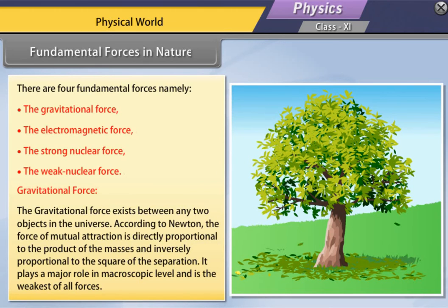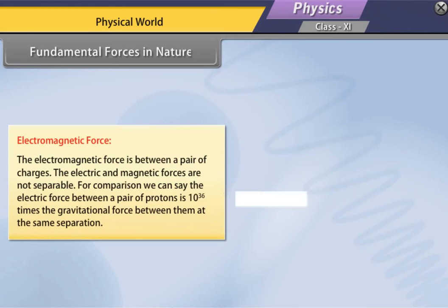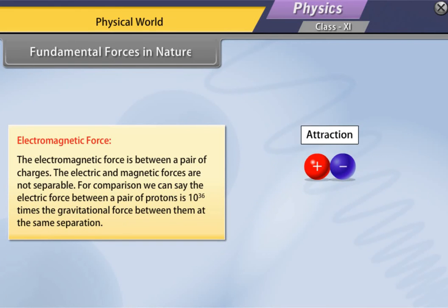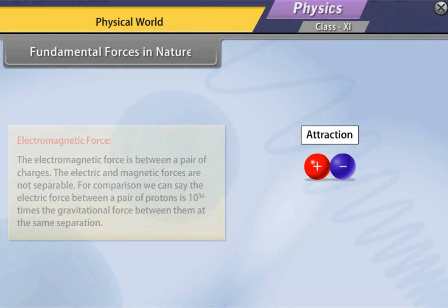The electromagnetic force is between a pair of charges. The electric and magnetic forces are not separable. For comparison, we can say the electric force between a pair of protons is 10 raised to the power 36 times the gravitational force between them at the same separation.